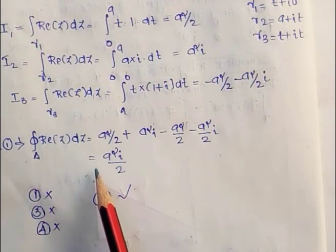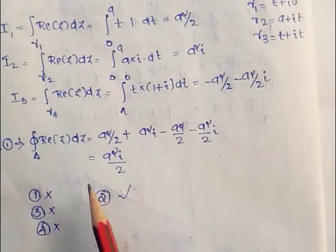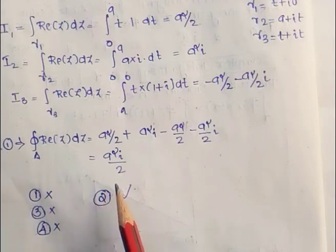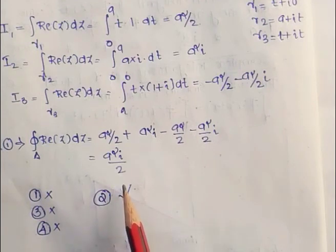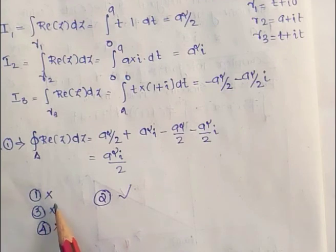We get the final answer: the integral over delta of Re(z) dz equals ia²/2. Therefore, we conclude that option 2 is correct and the remaining options — option 1, option 3, and option 4 — are all wrong.